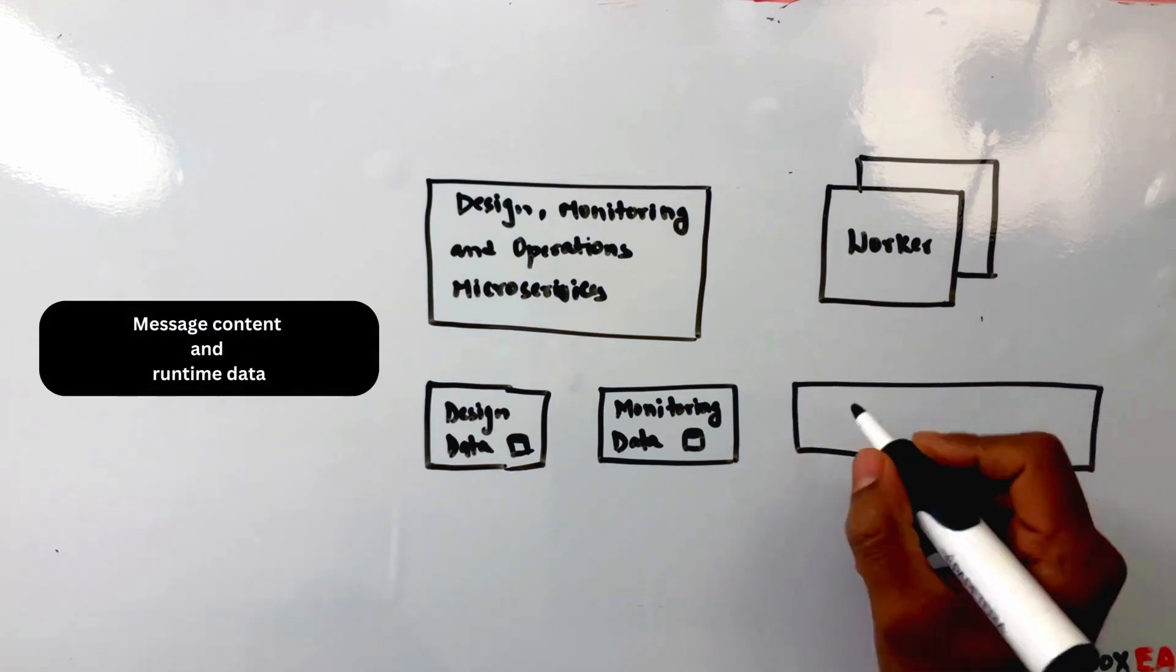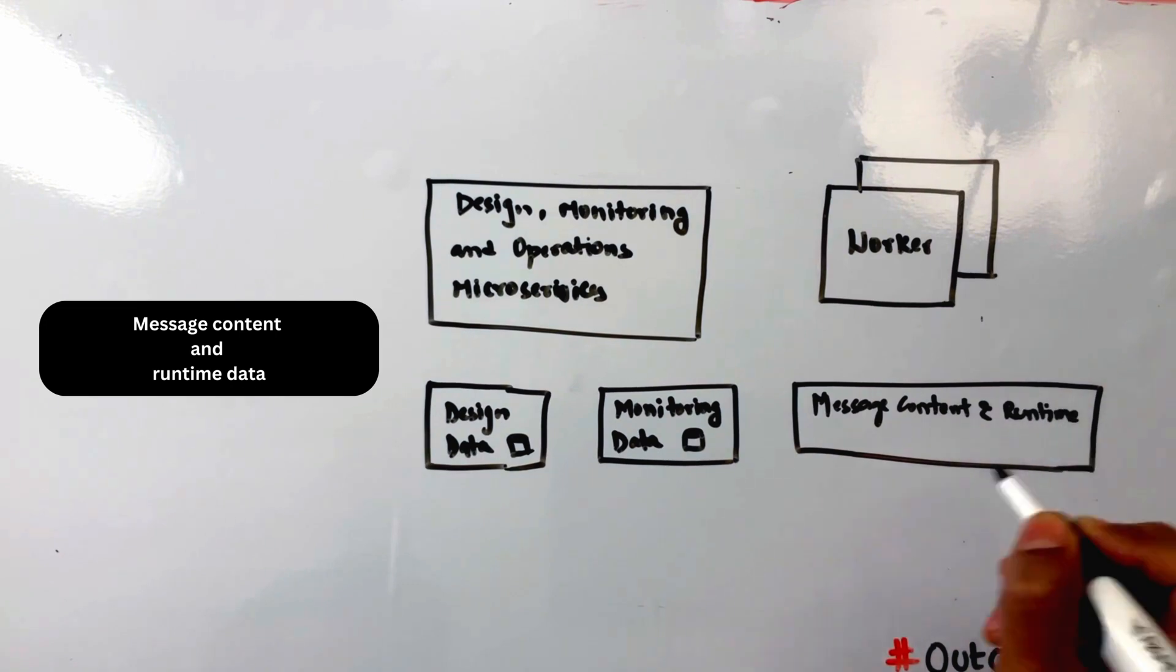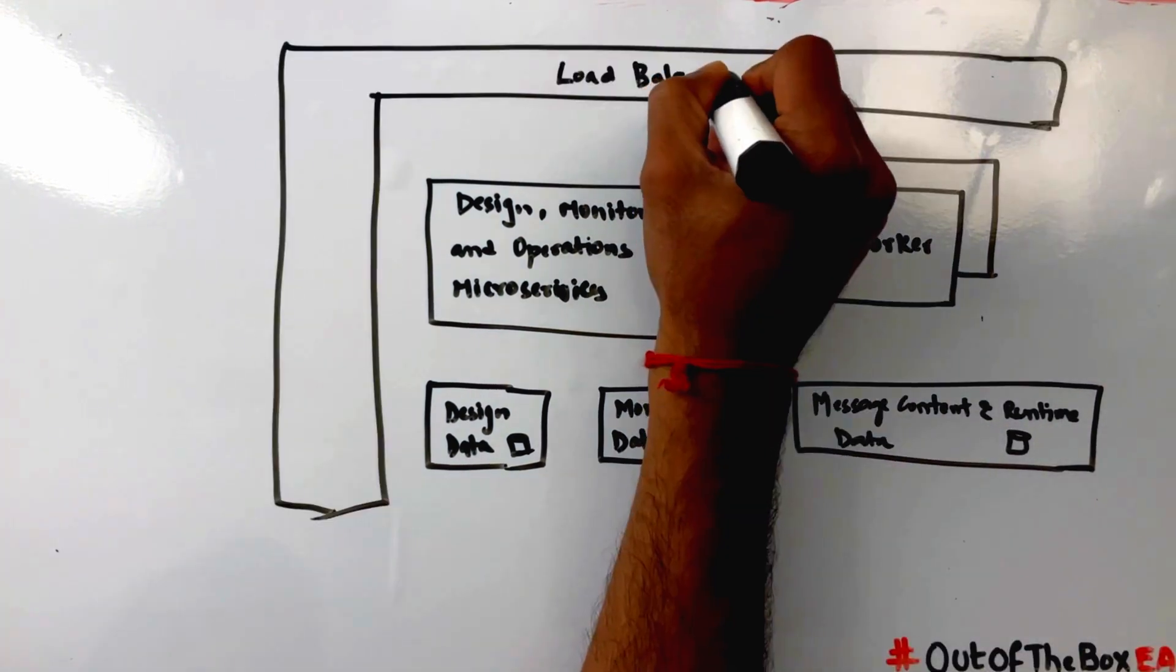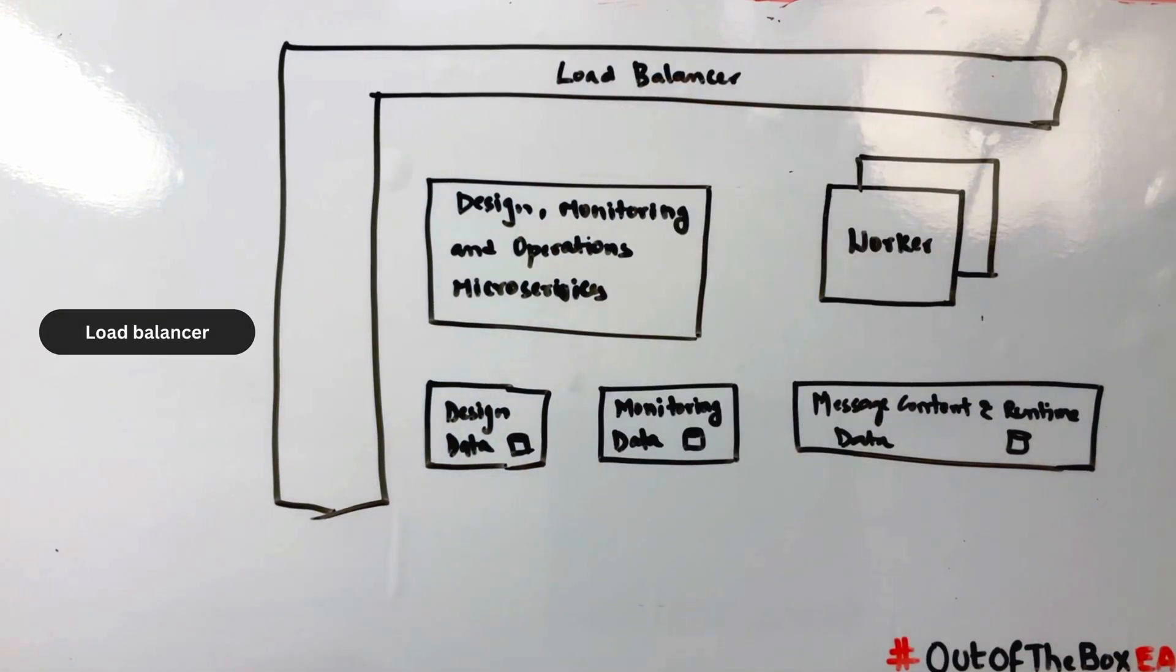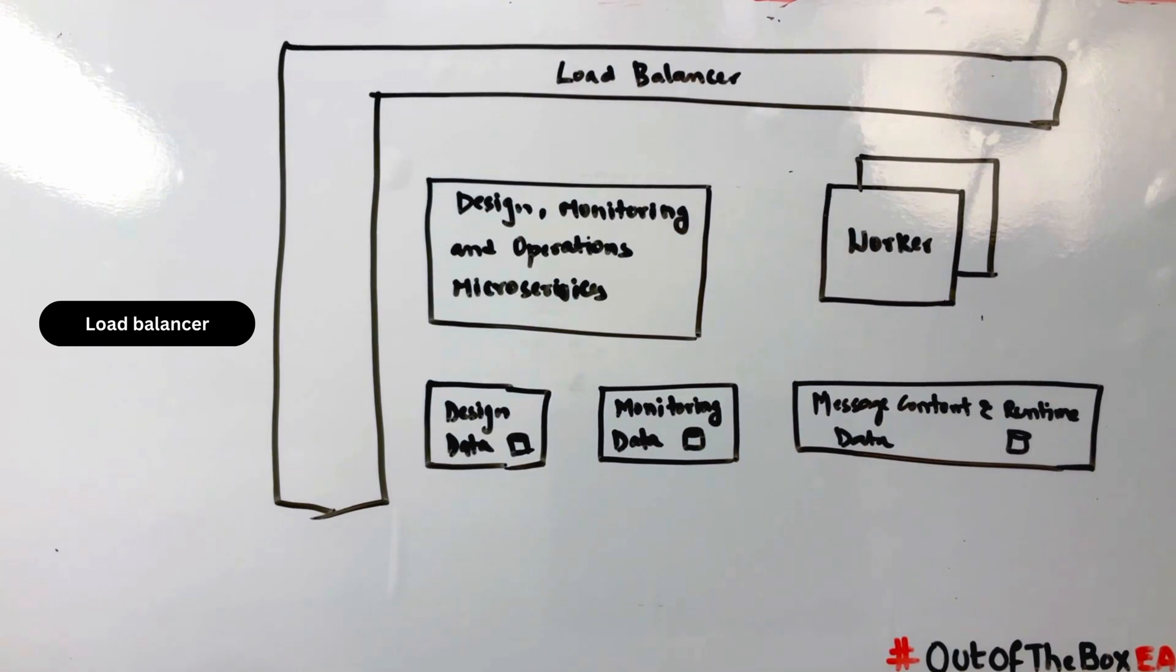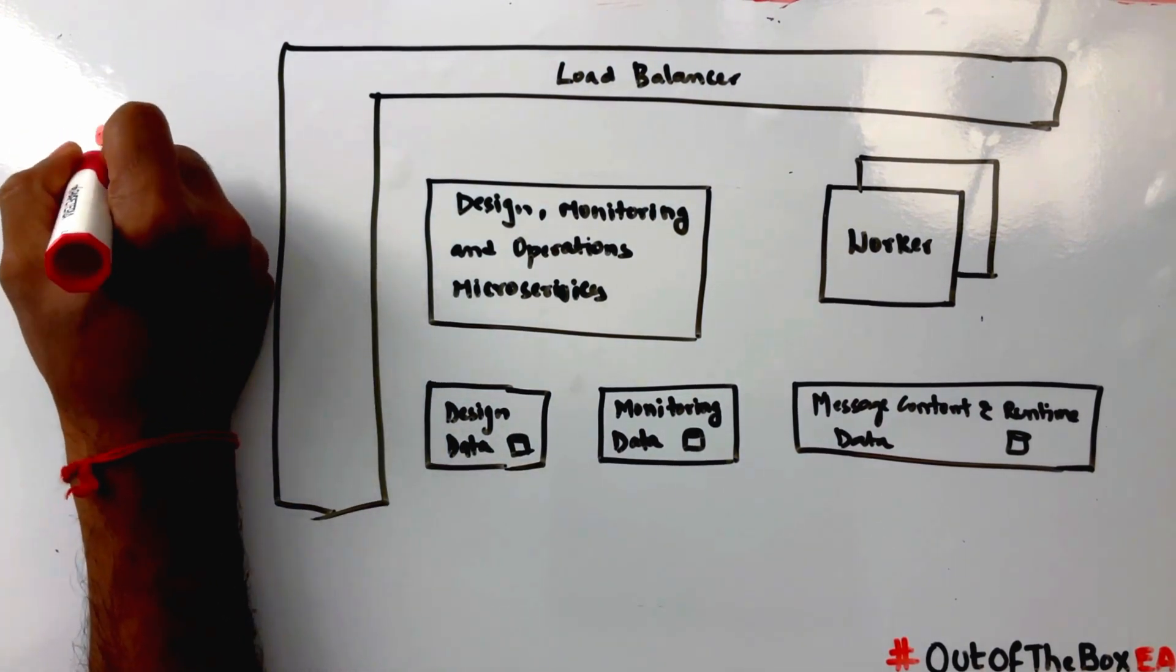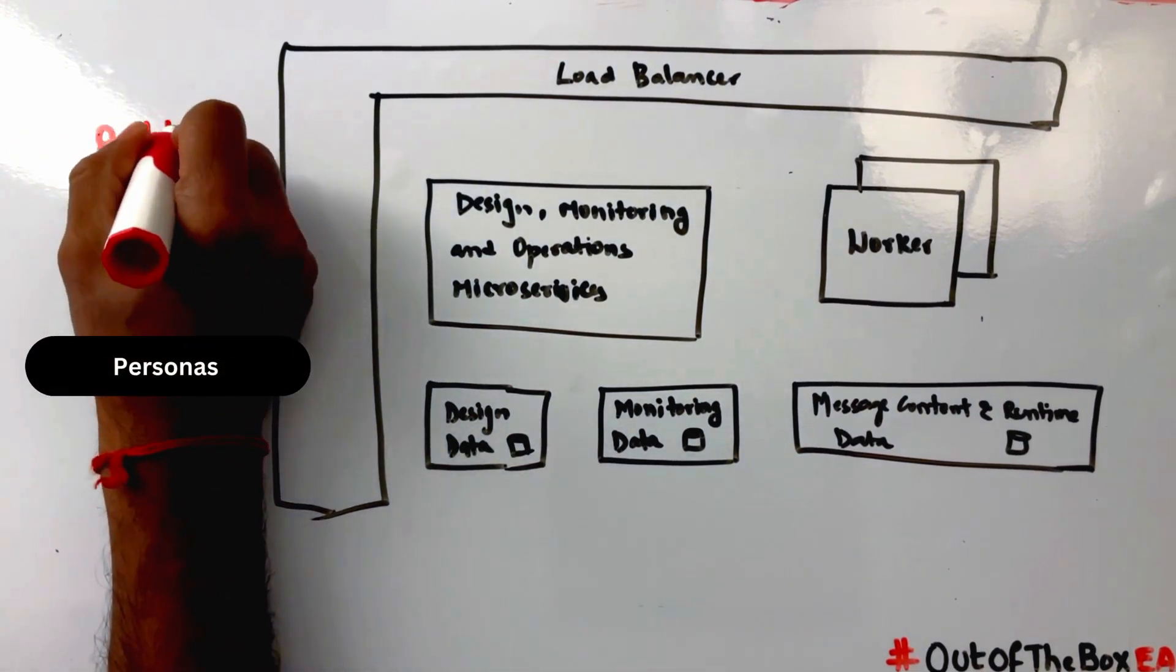We have message content and runtime data which will be used by workers for integration flow execution. In SAP CPI, a load balancer is a component that distributes incoming traffic across multiple worker instances. The load balancer ensures that the message traffic is evenly distributed among the available worker instances, providing high availability and scalability to the integration flows. Now let's discuss the various personas involved in SAP CPI.